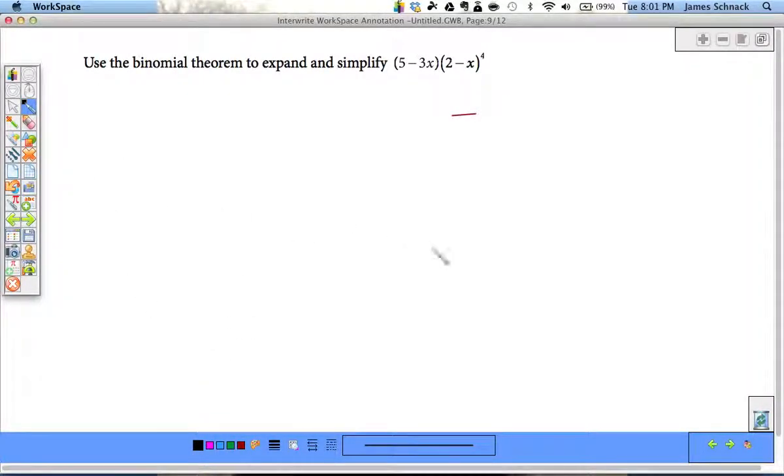So here we go. Let's see how you guys did. I'm going to leave this 5 minus 3x just hanging out here. That's going to do nothing yet. And I'm going to do my binomial expansion.